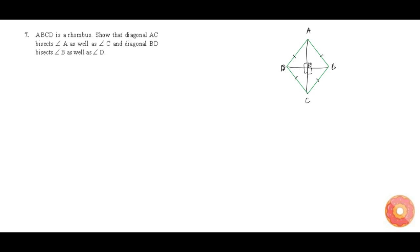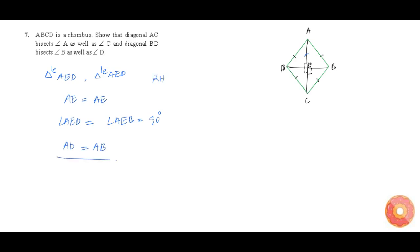Now, let us consider triangles AED and AEB. In both these triangles, side AE is common, which means AE is equal to AE. And we know that angle AED is equal to angle AEB, which is equal to 90 degrees, since the diagonals bisect each other at 90 degrees. And in a rhombus, since every side is equal, AD is equal to AB. Therefore, by RHS congruency, we can tell that these two triangles are congruent.